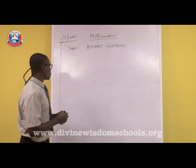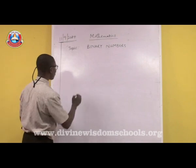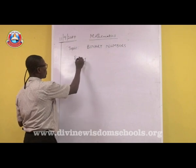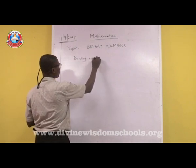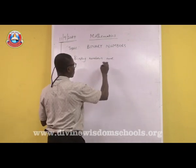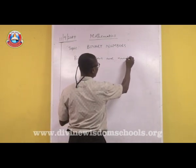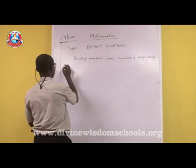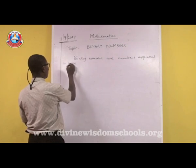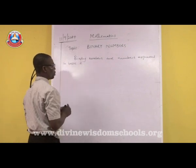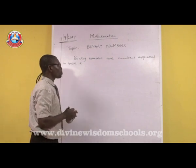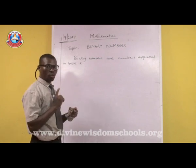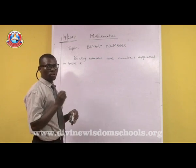And what we mean by base is this. Let me write the definition on the board. Binary numbers are numbers expressed in base 2. And in doing this, the numbers 0 and 1 are always used.